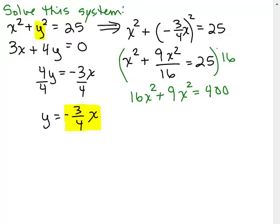So notice, I'm multiplying 16 by all three terms. I have to do it on each term, on each side of the equation. All right, so then this is simple to add like terms, 16 plus 9 is 25.